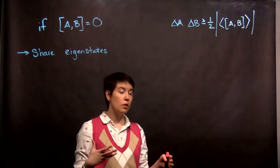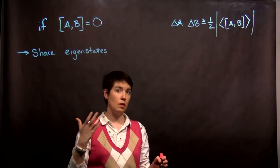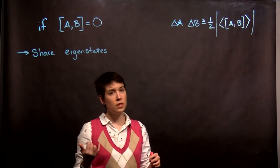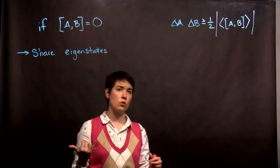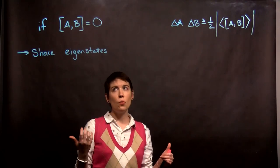So the example that I did in the previous video was looking at the commutation relationship between Sx and Sy. We know that those have different eigenstates, that measuring spin in your x-direction and measuring spin in your y-direction are not the same eigenstates.